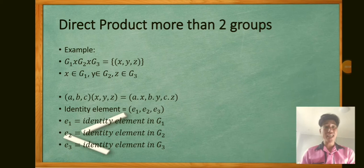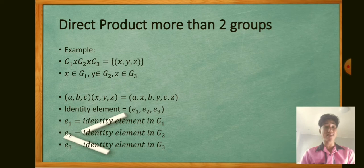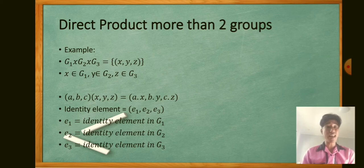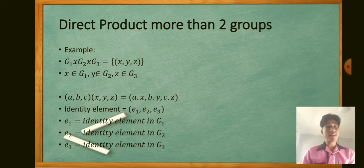Now we move to direct product with more than two groups. For G1, G2, G3, the direct product G1 × G2 × G3 equals {(x, y, z)} where x is an element of G1, y is an element of G2, and z is an element of G3. For elements (a, b, c) and (x, y, z), we compute (ax, by, cz). The identity element is (e1, e2, e3), where e1, e2, e3 are the identity elements in G1, G2, and G3 respectively.